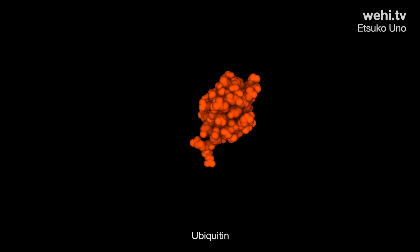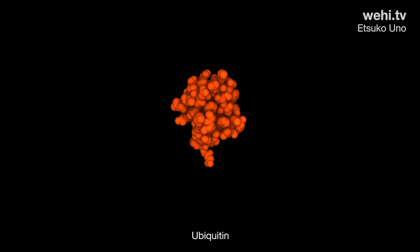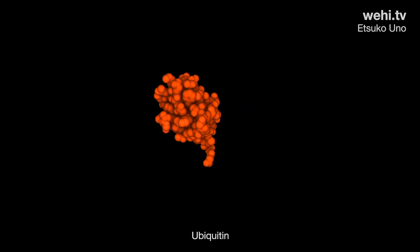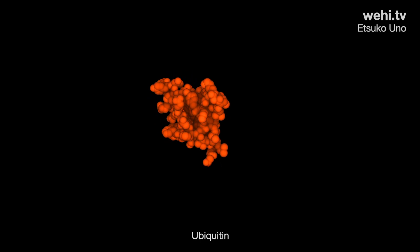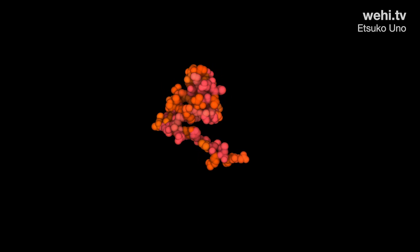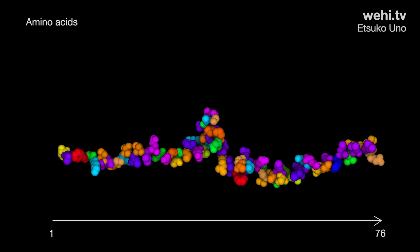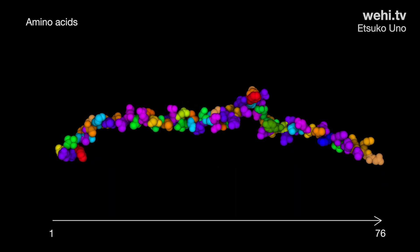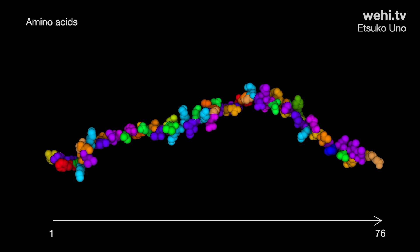Ubiquitin, a small protein found in all eukaryotic cells, plays a central role in controlling the fate and activity of other proteins. Ubiquitin attaches to other proteins, tagging them for various outcomes within the cell. Like all proteins, ubiquitin is a linear sequence of amino acids, made up of 76 amino acids.